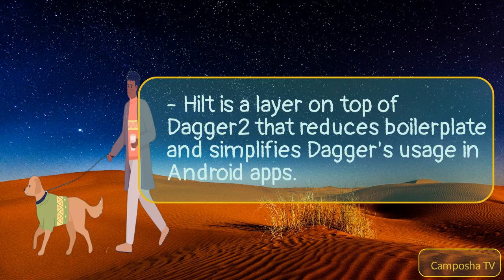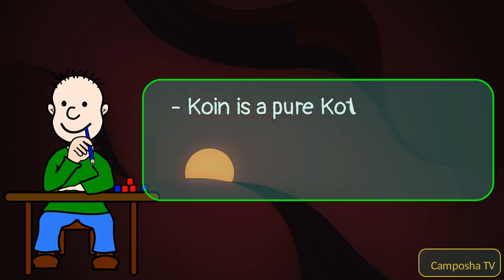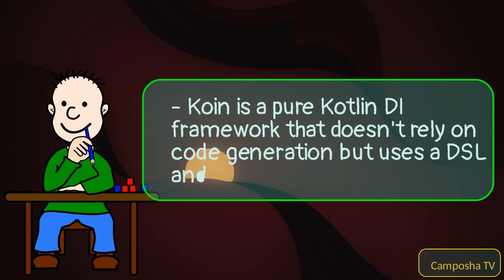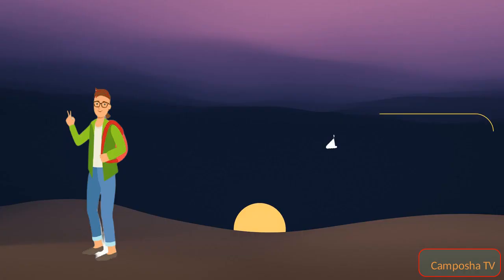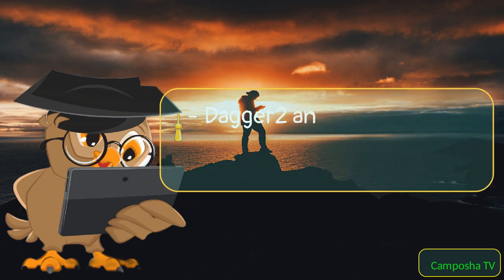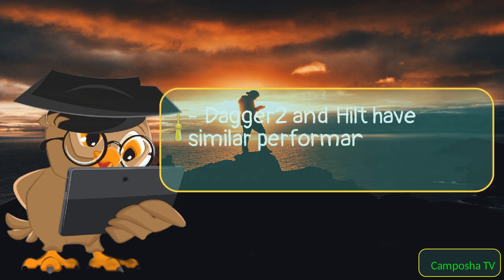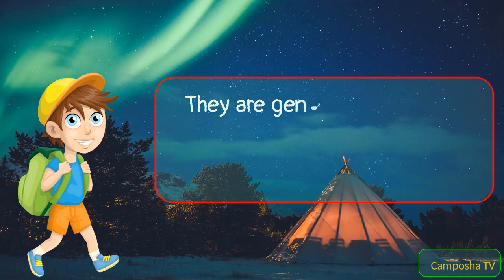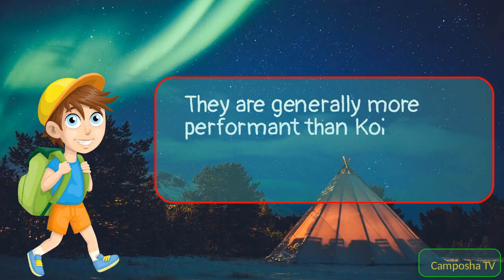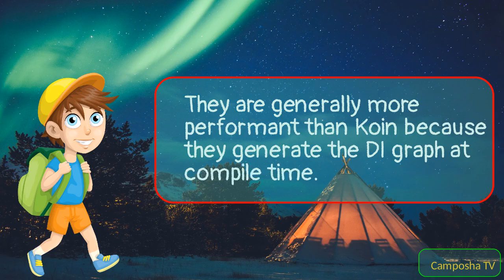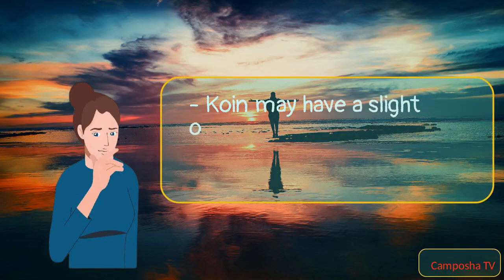Hilt is a layer on top of Dagger2 that reduces boilerplate and simplifies Dagger's usage in Android apps. Koin is a pure Kotlin DI framework that doesn't rely on code generation but uses the DSL and reflection. Performance: Dagger2 and Hilt have similar performance and are generally more performant than Koin because they generate the DI graph at compile time.